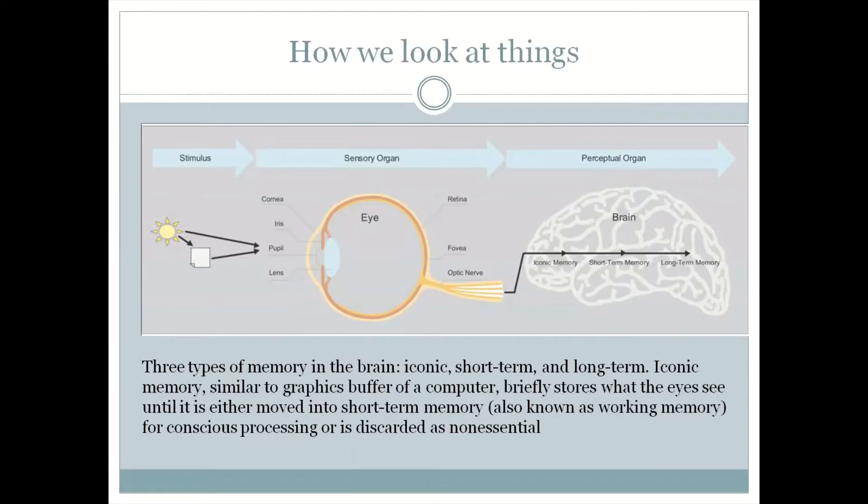The first thing that we need to understand is how we look at things. In the human brain there are three kinds of memory: the iconic, the short term, and the long term. The iconic is basically there for the wow effect, to catch a glimpse of anything that is out of the ordinary. This is where, if you think in terms of a communication product, the headline comes in—a report's headline or the report's name.